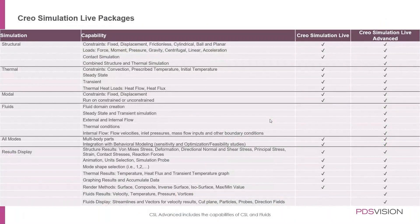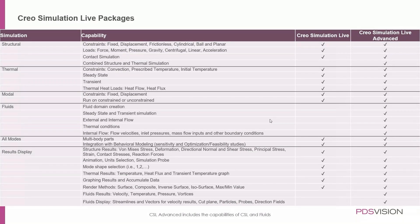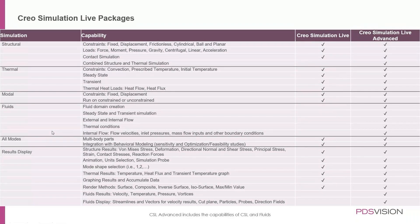Creo Simulation Live comes in two tiers. The first tier covers everything except fluids and combined structural-thermal. The advanced license is specifically for fluids and combined structural-thermal analysis.